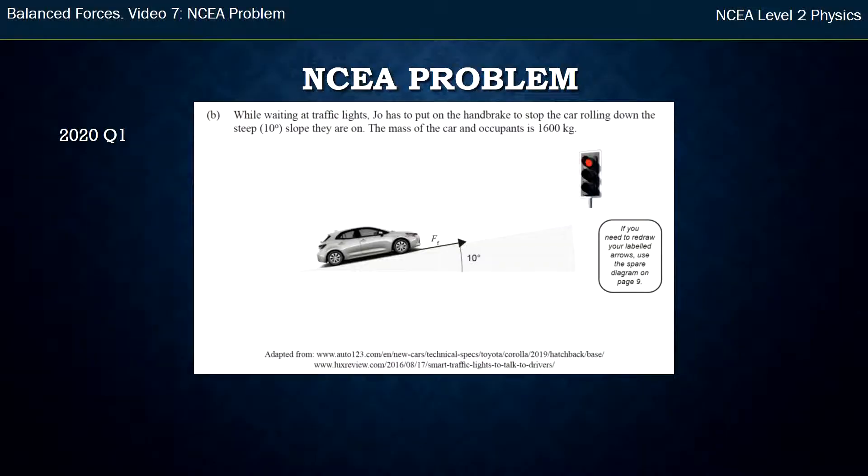Hi, this is Mr. McGovern. This is the seventh video in the Balanced Forces series, the last one where we look at an NCEA problem. This is from the 2020 paper, question 1b and C. They're both merit questions.